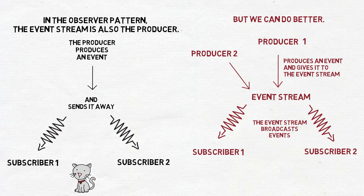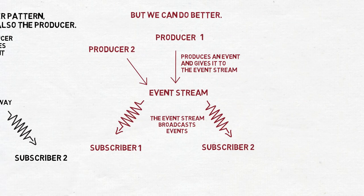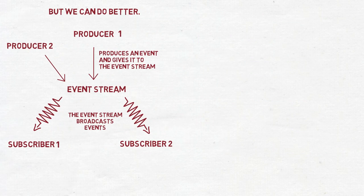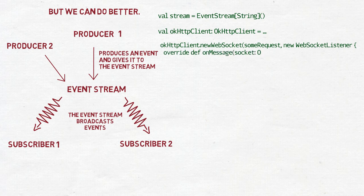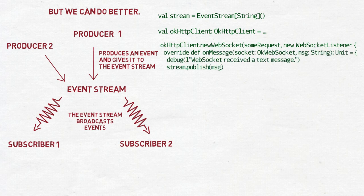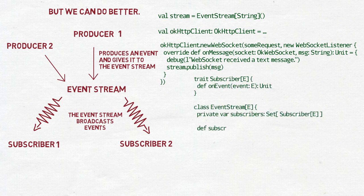In contrast to subscribers, producers don't even have to register in the event stream. Let's say our producer here is an OKHttpClient. OKHttp is an HTTP client library very often used on Android. We have an instance of it, and we open a WebSocket — a connection to the backend — and we wait for some data from it. We don't actually produce anything; it's more like another link in a chain. But from the point of view of our Android app, this is how our events are produced.